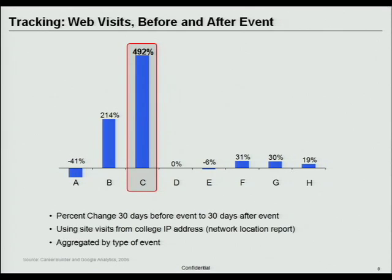It was quite interesting — C did really well, B did well, F and G were pretty good, while A, D, E, and H not so much. When we presented this, they took it back and said, wow, this is great. Now we know what to spend our time on for offline event marketing because we're able to look at the response online.